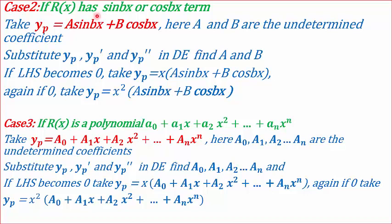In case 2, what if r(x) has terms like sin(bx) or cos(bx)? We take yp = A·sin(bx) + B·cos(bx), where A and B are the undetermined coefficients. We substitute yp, yp', and yp'' in the differential equation and find A and B by comparing coefficients on both sides. If the left-hand side becomes 0, multiply by x. If it is 0 again, multiply by x².